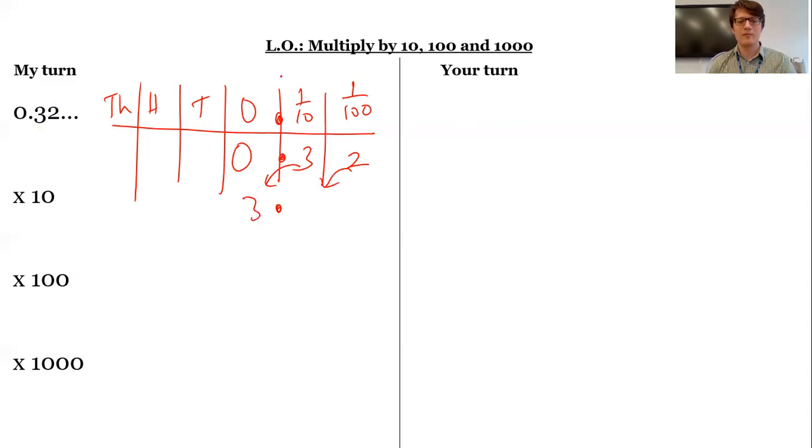So I'm going to keep my decimal point in place. So I get 3.2 times 100. I'm going to get 32, and 320 will be times 1,000.